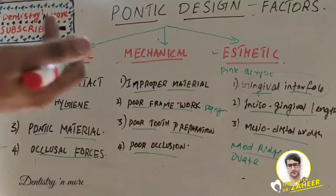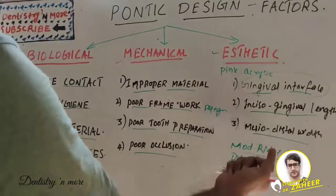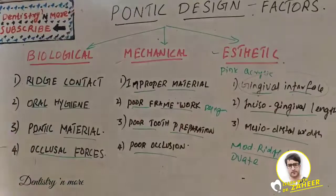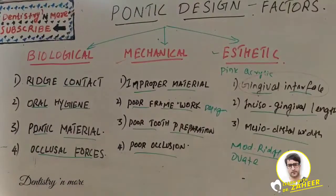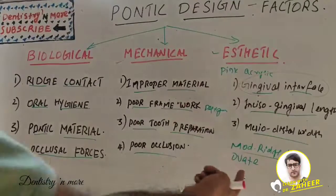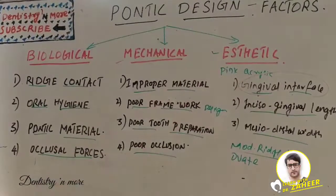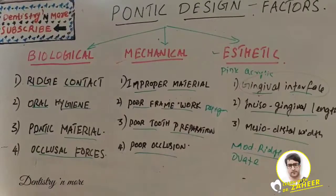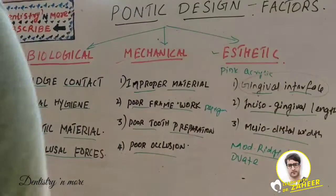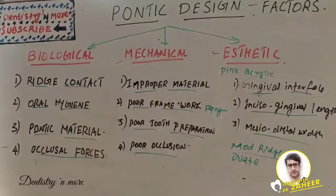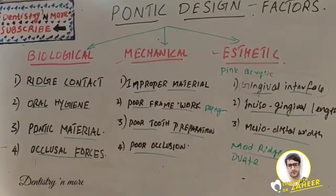We can go for a modified ridge lap, which is recommended for most anterior teeth, because it compensates for the lost buccolingual width in the ridge by overlapping the existing ridge, compensating for the loss of alveolar ridge in the buccolingual dimension after extraction. We can also consider the ovate pontic, used in conjunction with alveolar preservation or soft tissue augmentation, which can provide a remarkable appearance.